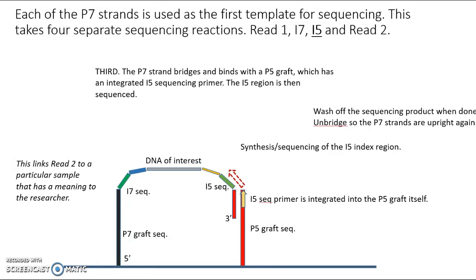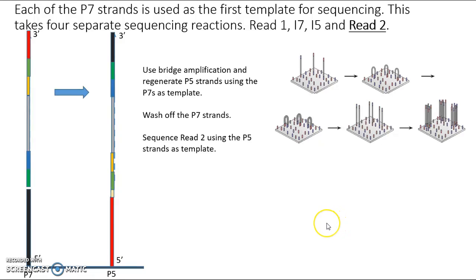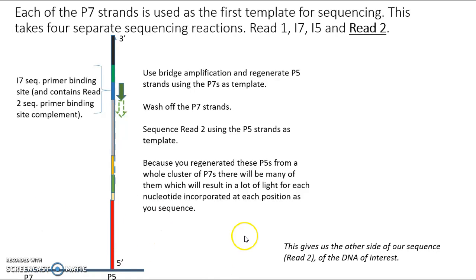And then we go on. And the last step is to sequence Read 2. And before we do that, we have to actually regenerate the P5 strands. So far, we sequenced Read 1, index 7, and index 5, traveling in this direction and using the P7 side as the template. And that's just not going to work because of orientation for sequencing Read 2. So what we're going to do is we're going to redo bridge amplification, a round or two of bridge amplification. And we're going to go from this to this, and we're going to regenerate clonal clusters that are only P5. So we'll use this as template. We'll build up a whole bunch of the mixture, and then we'll wash off or eliminate the P7, leaving us in this case with only P5s. And there are P5s and we don't only have one of them. We have a whole clonal cluster of them.